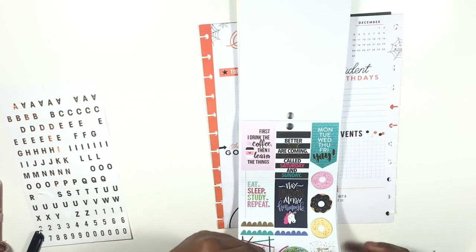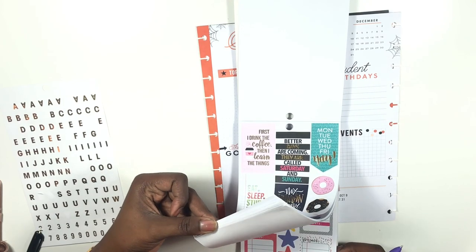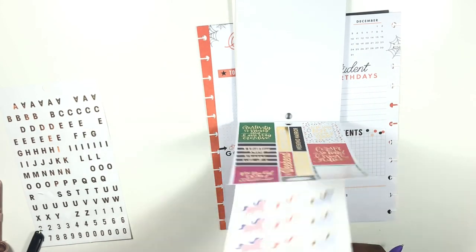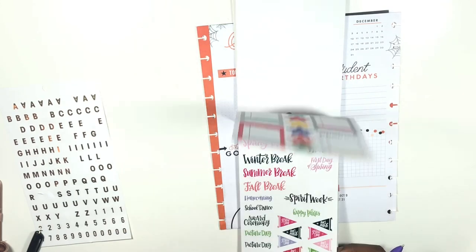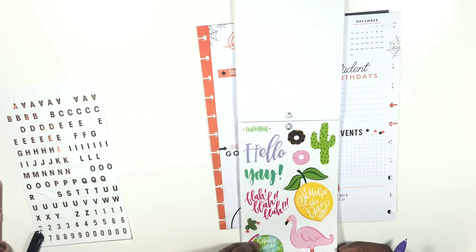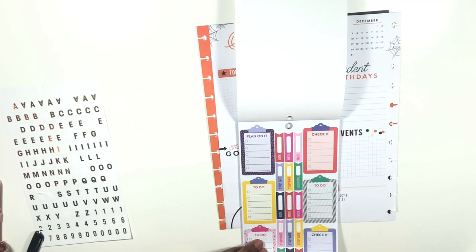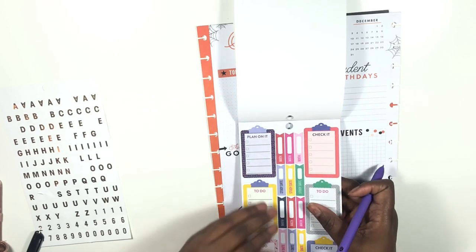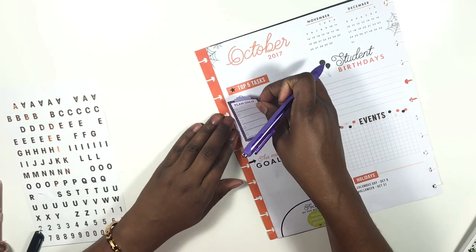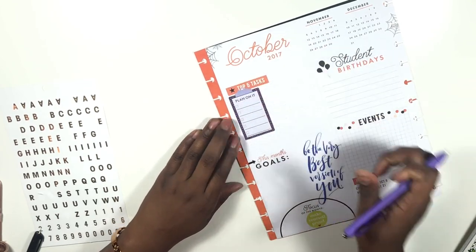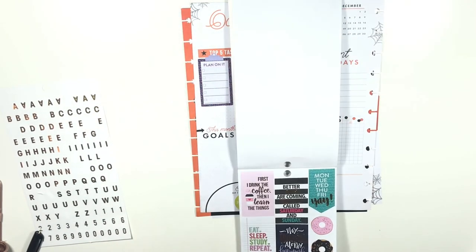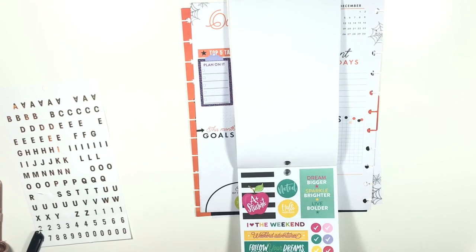My top five tasks — let's see. I'm going to use this space for my top five tasks. I don't really do student birthdays in here because I don't like to share that information, so I'm going to cover that section with this sticker.